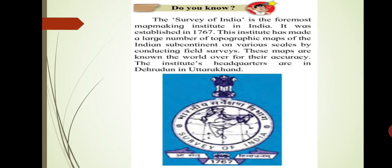Do you know? The Survey of India is the foremost mapmaking institute in India. It was established in 1767. This institute has made a large number of topographic maps of the Indian subcontinent on various scales by conducting field surveys. These maps are known the world over for their accuracy. The institute's headquarters are in Dehradun in Uttarakhand.